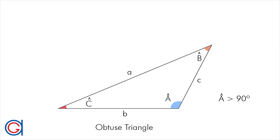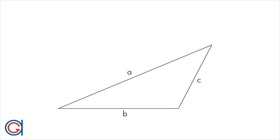So to summarize, today we have learned how to classify triangles according to their sides and according to their angles. We have also learned the standard international nomenclature, or how we represent the sides and the angles of a triangle. I hope this video has helped you, please press like and subscribe to our YouTube channel. Until the next time, thank you.